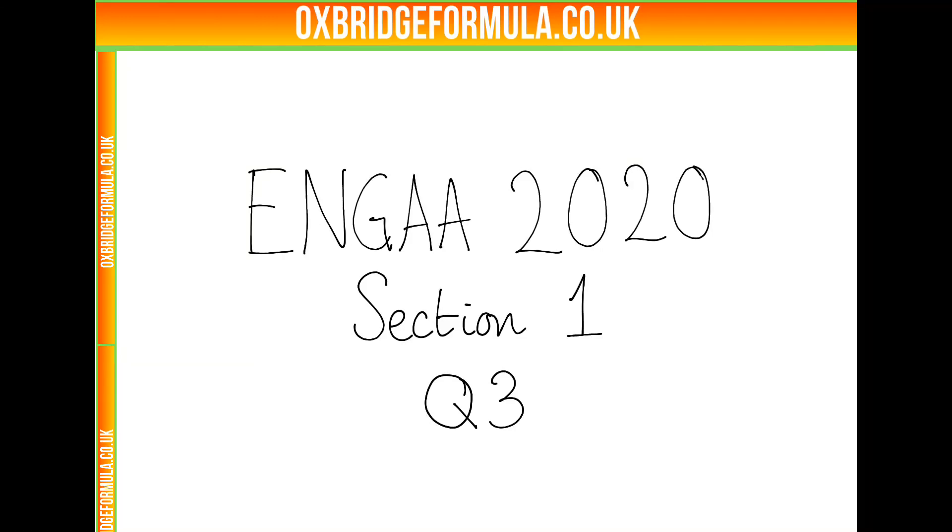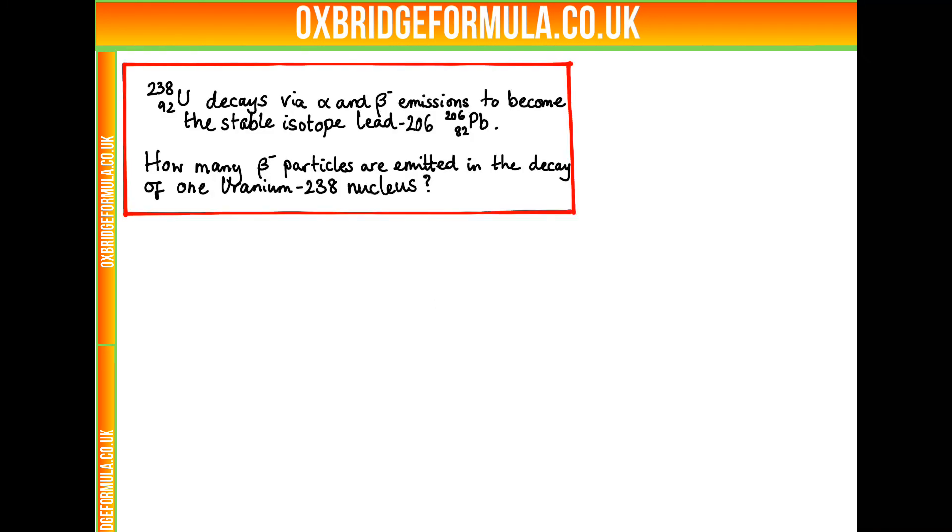This question is taken from the ENGAA 2020 Section 1 paper and it is question 3. We read: uranium-238 decays via alpha and beta-minus emissions to become the stable isotope lead-206. How many beta-minus particles are emitted in the decay of one uranium-238 nucleus?